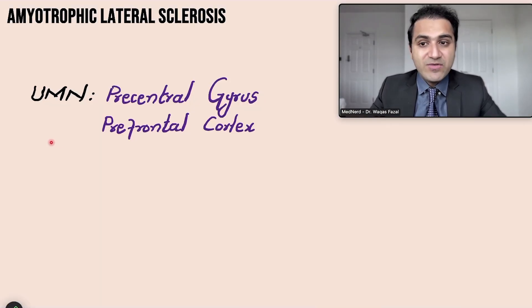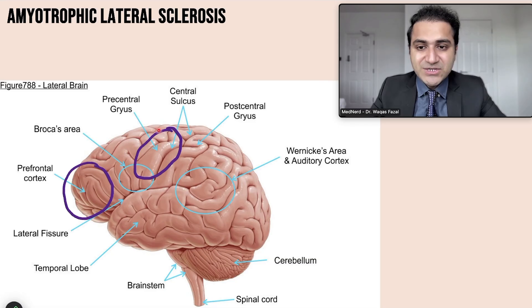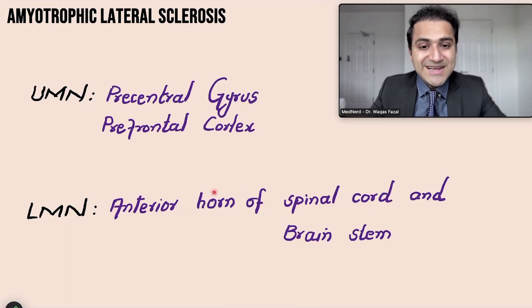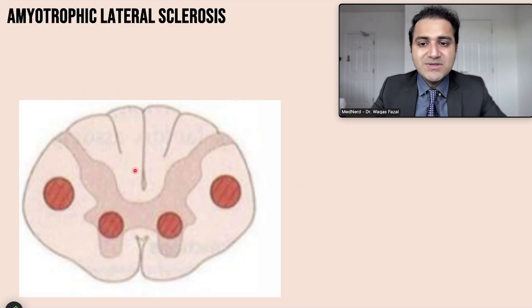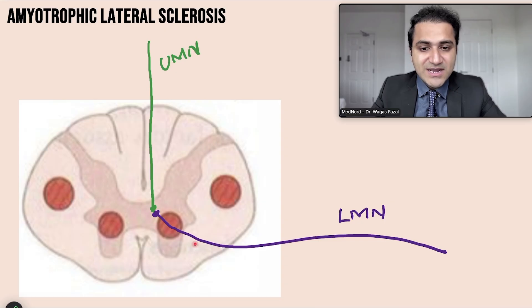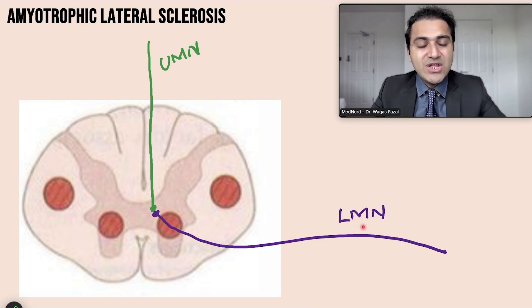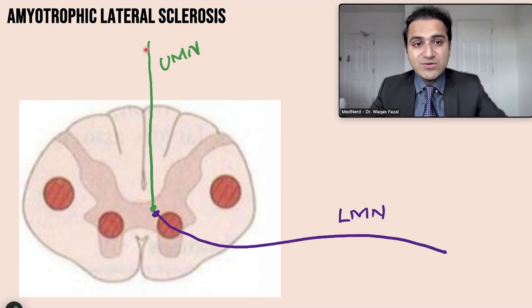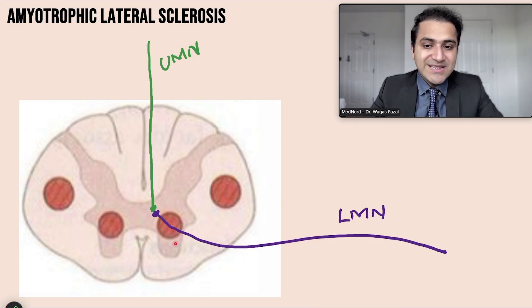The areas damaged in ALS: upper motor neuron injury mainly takes place in the precentral gyrus and prefrontal cortex. For lower motor neuron injury, damage occurs in the anterior horn of the spinal cord — a very important, high-yield point. Lower motor neurons arise from the anterior horn, so when it is damaged, there is lower motor neuron dysfunction. Upper motor neuron = precentral gyrus and prefrontal cortex; lower motor neuron = anterior horn of spinal cord.